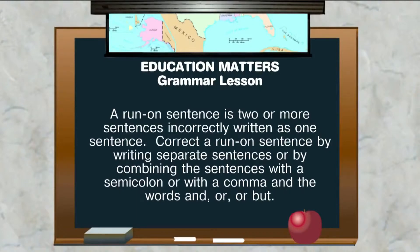To correct a run-on sentence, you can do it by writing separate sentences — that's always great — or by combining the sentences with a semicolon, or with a comma and the words and, or, or but.